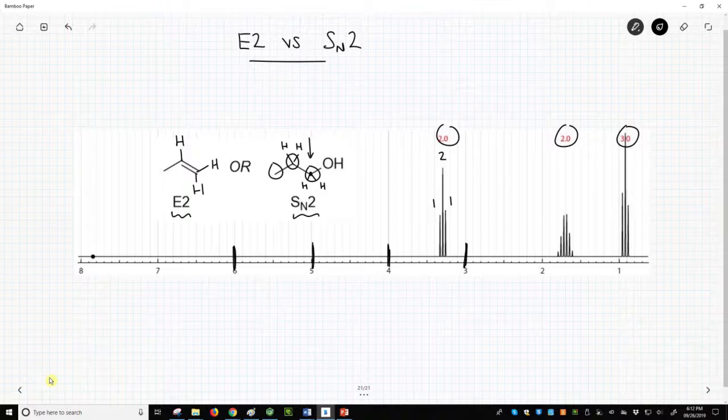The product of the reaction is an SN2, not an E2. While sodium hydroxide is a strong base, it will do an SN2 on an unhindered primary halide.